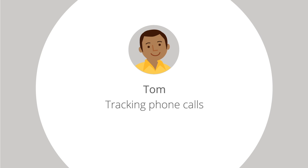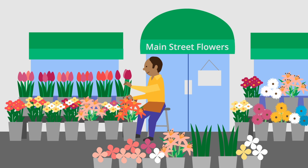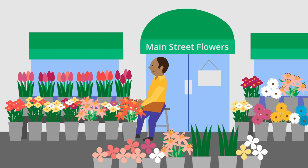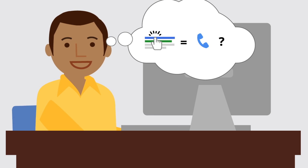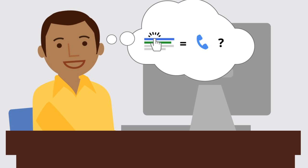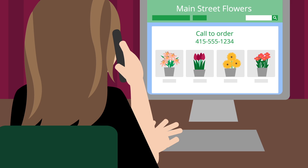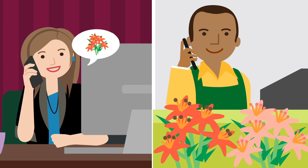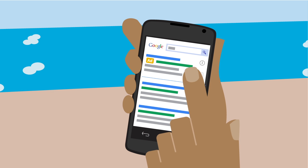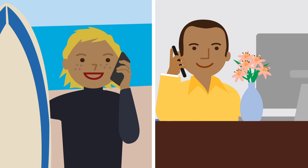Tom — tracking phone calls. Tom owns Main Street Flowers. His website isn't set up for online orders, but he takes delivery orders over the phone. He sets up conversion tracking so he can know how many phone calls he's getting from his ads. He tracks calls made from his website by using free Google forwarding phone numbers on his site, and also uses Google forwarding numbers to track calls made directly from his ads.